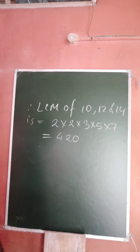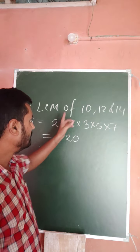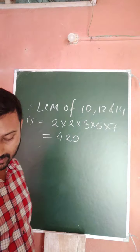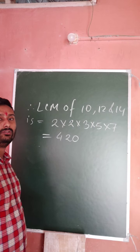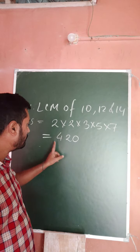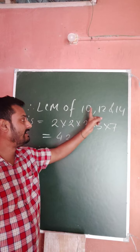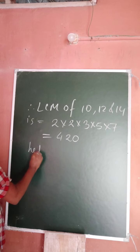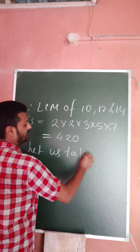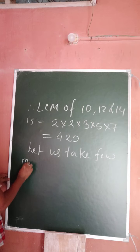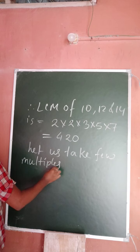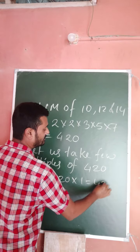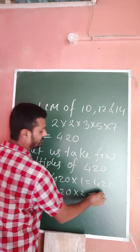420 is the least number which is divisible by all of 10, 12, and 14. But they are asking us to find the greatest three-digit number which is exactly divisible by 10, 12, and 14. We need to check whether 420 is the greatest or not. Let us take two multiples of 420: 420 × 1 = 420, and 420 × 2 = 840.